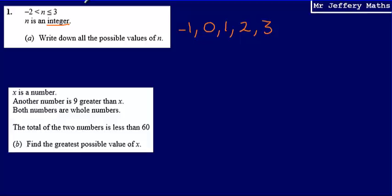Okay, part b. We're told that x is a number. Then we're told another number is 9 greater than x. We're also told that both numbers are whole numbers. And the total of the two numbers is less than 60. We're asked to find the greatest possible value of x.